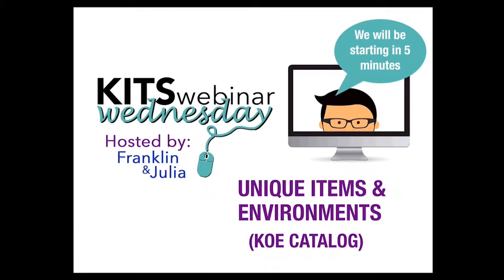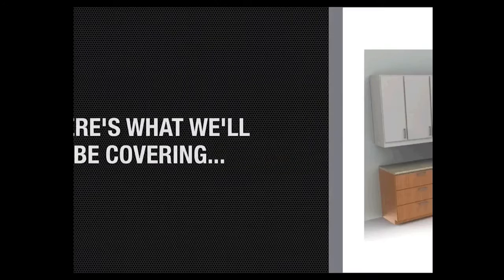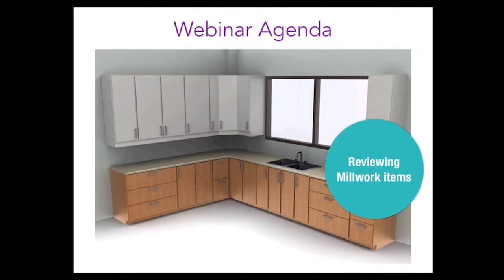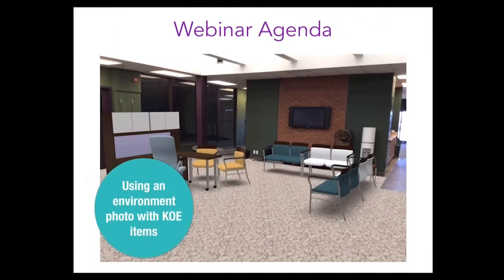In the last session of our KOE series, we showed you architectural elements and how to use them to recreate your client's base. Today we're going to have some fun. So today we're going to be going over unique items like the architectural elements, millwork components, and also recreating your client's office space using both an environment photo and the KOE catalog. The client's sitting area was created near a kitchenette so that access to the area would be easy for guests. Franklin is now going to show you how to use those millwork components to recreate this space.